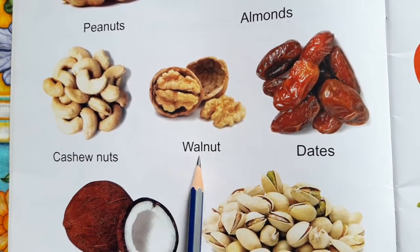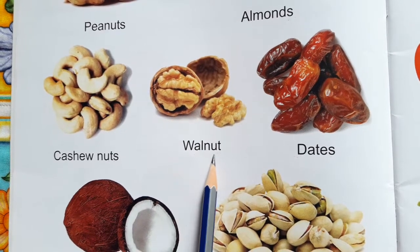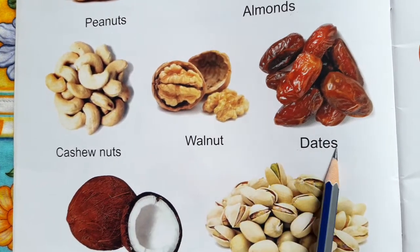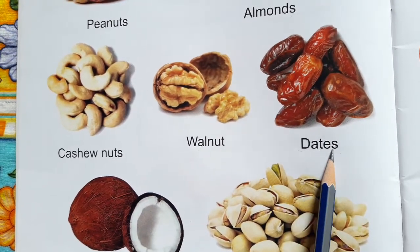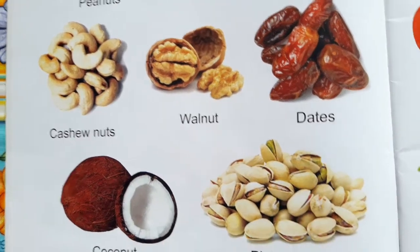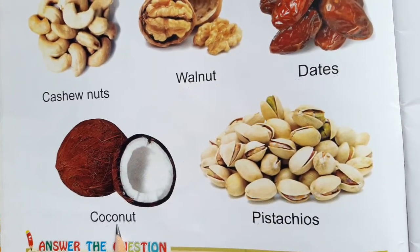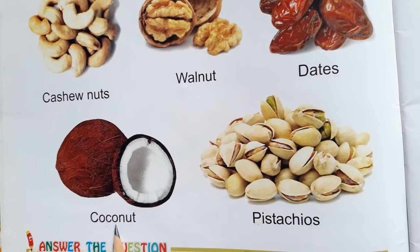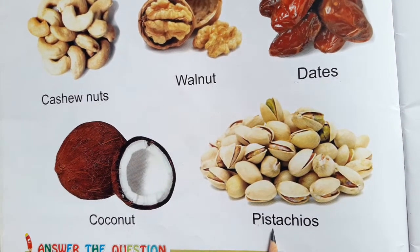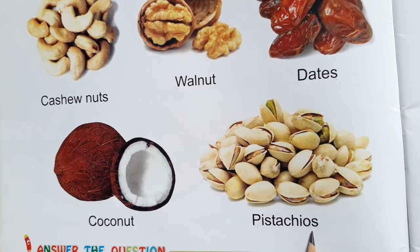Name of this dry fruit is Walnut, Walnut. Name of this dry fruit is Dates, Dates. Name of this dry fruit is Coconut, Coconut. Name of this dry fruit is Pistachios.